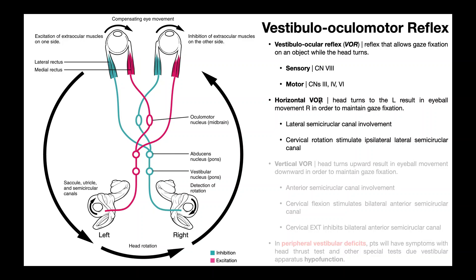The horizontal VOR involves the lateral — also called horizontal — semicircular canals. When we undergo cervical or neck rotation, this is always going to stimulate the ipsilateral lateral or horizontal semicircular canal. In the diagram, pink is excitation and green is inhibition. So if I rotate my neck to the left, the left lateral semicircular canal is activated, while the right lateral canal is inhibited.